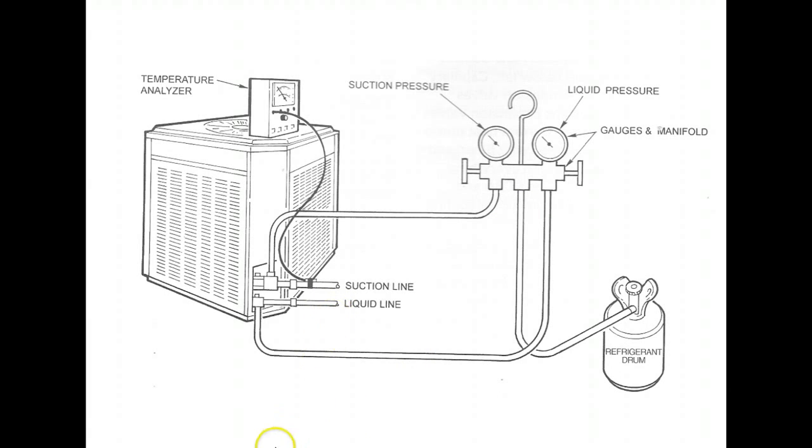The other part of hooking up the system is you're going to want to make sure that you have your temperature analyzer or your temperature gauge set up. And you're going to have it set up so that you have the sensing bulb and the temperature probe mounted about six inches away from the condensing unit on the suction line. And that is if you're measuring superheat.